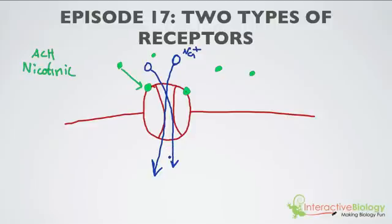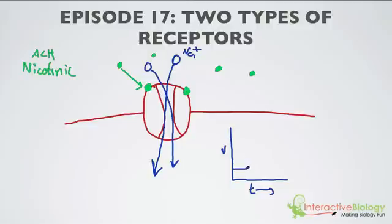Now you know that sodium ions are going to have a positive charge. So what do you think that's going to do to the membrane of the cell? Well, that's going to make it more positive. Let's say I am looking at voltage, or membrane potential, on the y-axis, and we're going to have time on the x-axis. This is the resting membrane potential. When something like this happens, it causes sodium to come in, which can cause the membrane potential to get this little bump here — it increases a little from that sodium rushing into the cell. Because this is becoming more positive, we're going to call this an excitatory post-synaptic potential, EPSP, because it's acetylcholine binding to the nicotinic receptor causing sodium ions to rush in.